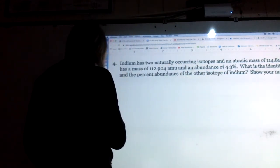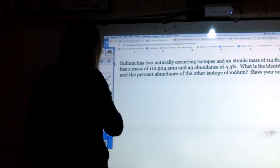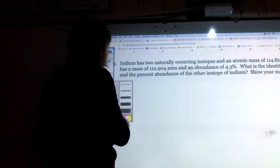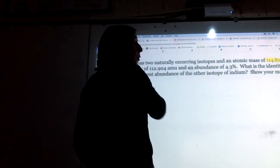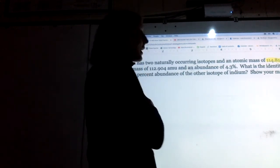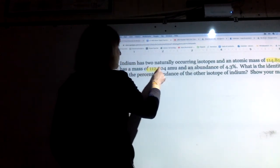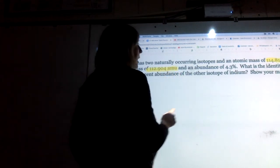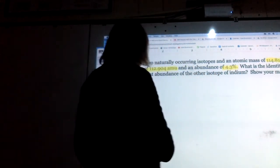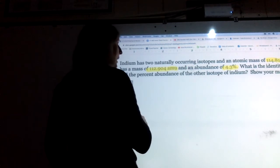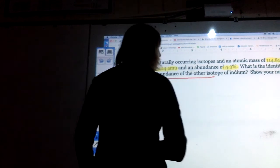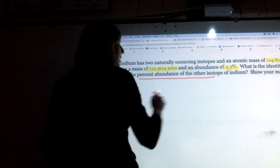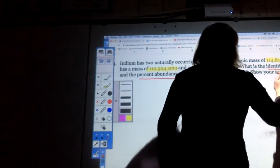So I have some information here that's helpful already. I have the atomic mass which is 114.818, so that's going to be the answer to my problem, and then I know that one of the isotopes here has an abundance of 4.3%, and they want me to find the percent abundance of the other isotope and the identity, so that means the mass.